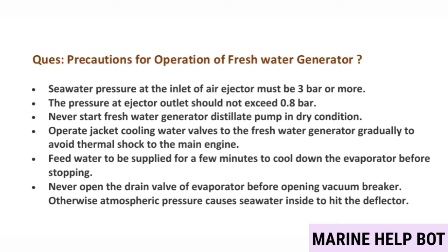Precautions for operation of the fresh water generator: sea water pressure at the inlet of the air ejector must be three bar or more; the pressure at the ejector should not exceed 0.8 bar. Never start the fresh water generator distillate pump in dry condition. Check cooling water valves gradually to avoid thermal shock to the main engine. Never open the drain valve of the evaporator before opening the vacuum breaker, otherwise atmospheric pressure causes sea water inside to hit the deflector.